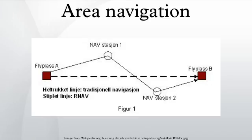RNAV specifications include requirements for certain navigation functions. These functional requirements include: continuous indication of aircraft position relative to track to be displayed to the pilot flying on a navigation display situated in his primary field of view; display of distance and bearing to the active waypoint; display of ground speed or time to the active waypoint; navigation data storage function; and appropriate failure indication of the RNAV system including its sensors.